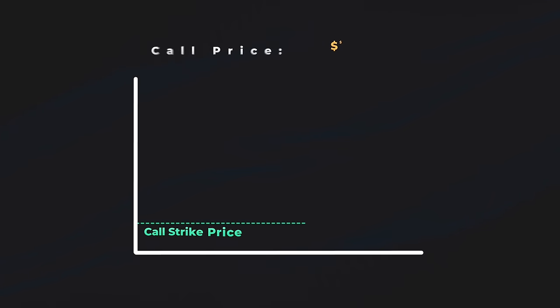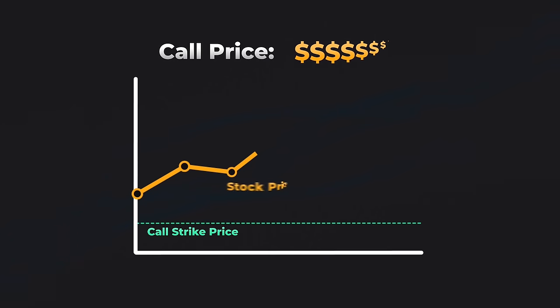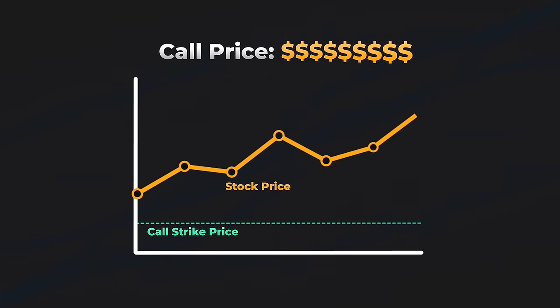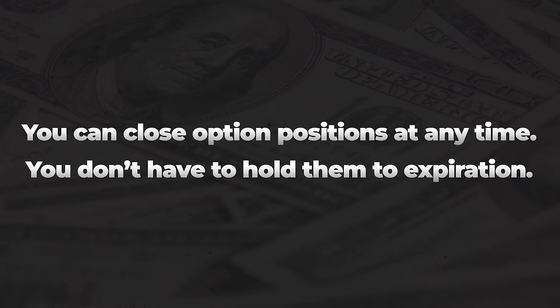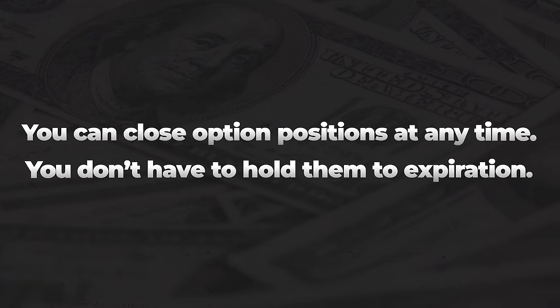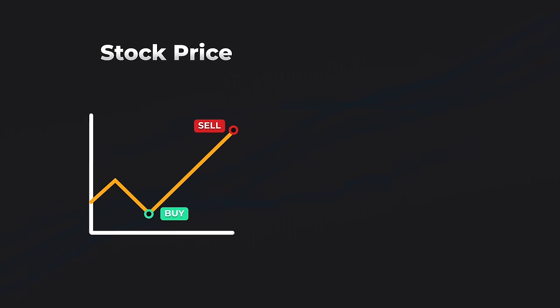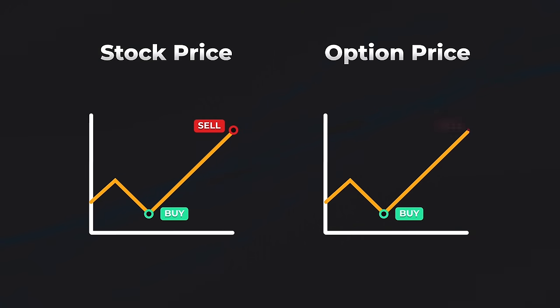The key points to take away: first, call options go up in value as the stock price goes up, because the ability to buy shares at a fixed price gets more valuable as the stock price rises above that fixed price. Second, you can close your options at any time — you do not have to hold them until the expiration date. Just like buying and selling shares of stock, you want to buy the option at a low price and sell it for a higher price, therefore making a profit.